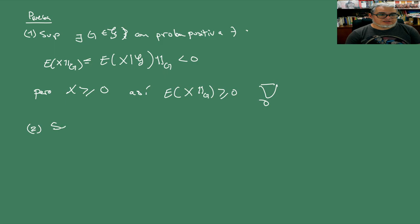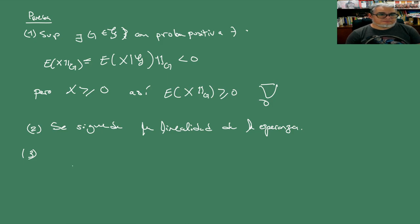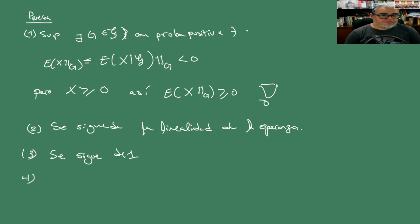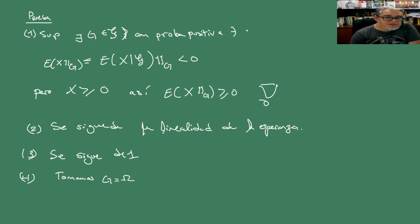Para la parte 2, se sigue de la linealidad de la esperanza y de la unicidad. La 3 se sigue de la 1, porque estamos igualmente pidiendo una comparación. La 4 se obtiene tomando G igual a todo Ω. Y ya terminamos. La 5 hay que pensarlo un poquito más, pero también es bastante sencilla: hay que suponer que X es G-medible.